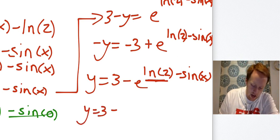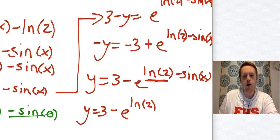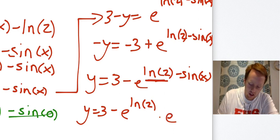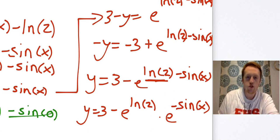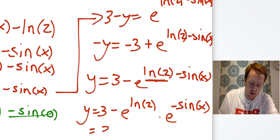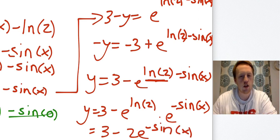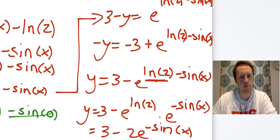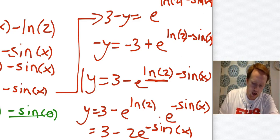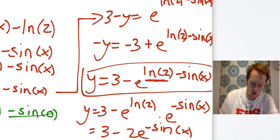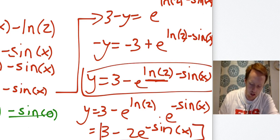So y = 3 - e^(ln(2) - sin(x)). When you have addition and subtraction in exponents, what you do is you just break it out like this. So now I can actually say that that's 3 - 2e^(-sin(x)). You can't cancel that e with a natural log of two until you split it up like that. So again, this answer right here would have been fine. This is more like a multiple choice answer.